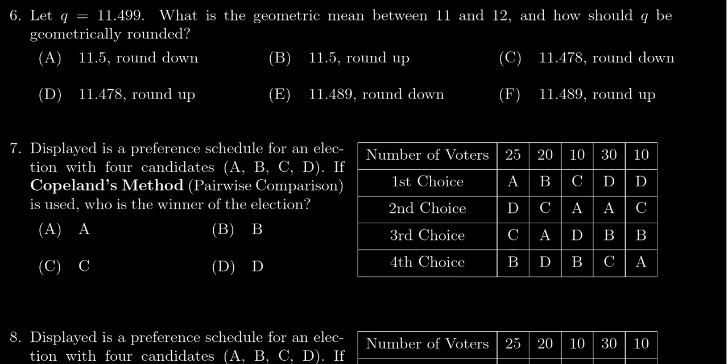So the first thing to do is to compute the square root of 11 times 12, which 11 times 12 is 132. So we want to take the square root of 132, for which you want to utilize a calculator in this situation.